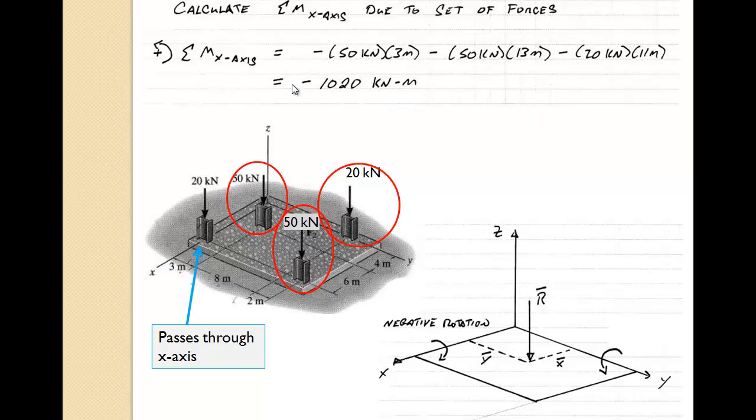All those added together gives a total moment about the x-axis due to the application of these four loads of 1,020 kilonewton meters with the negative sign indicating that the rotation is in the clockwise direction.